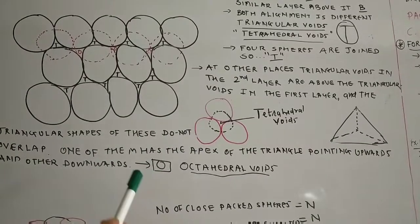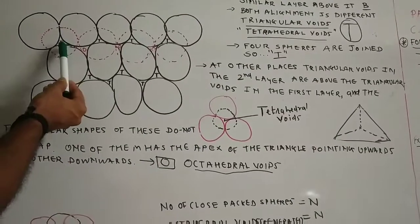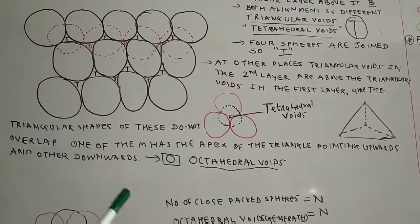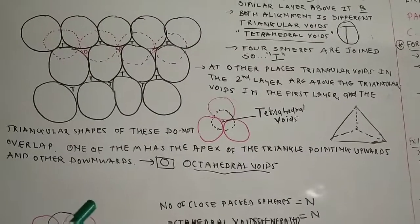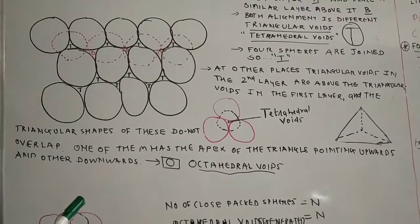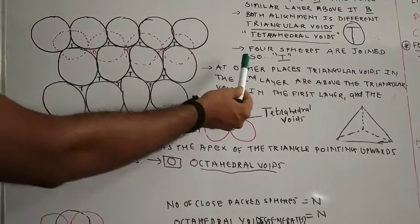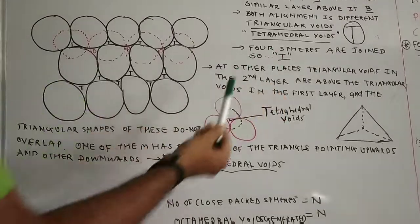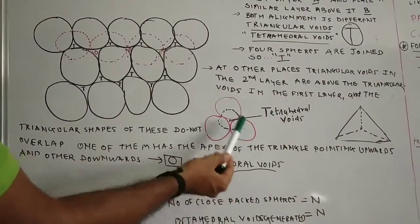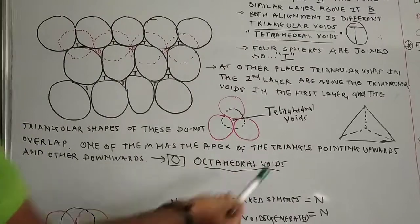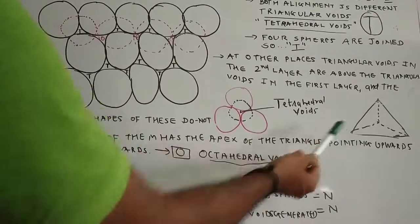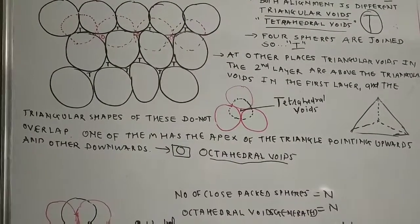Triangular voids will be generated in the diagram — you can see T, T, T, T, that is triangular voids. We can also call them tetrahedral voids. Four spheres are joined and so they are forming the tetrahedral voids — you can see 1, 2, 3, and 4 in the diagram. It generates the tetrahedral voids, and in three dimensions the shape would be like this.